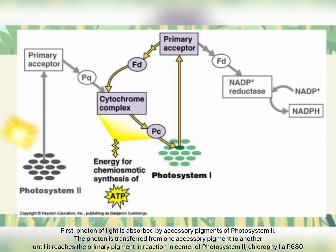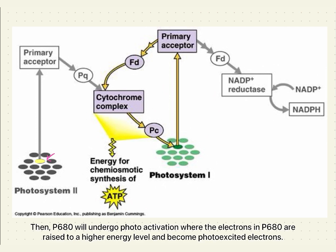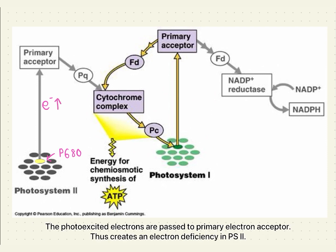First, a photon of light is absorbed by accessory pigments of photosystem 2. The photon is transferred from one accessory pigment to another until it reaches the primary pigment in the reaction center of photosystem 2, chlorophyll A P680. Then, P680 will undergo photoactivation where the electrons are raised to a high energy level and become photo-excited electrons. The photo-excited electrons are then passed to the primary electron acceptor, creating an electron deficiency in PS2.